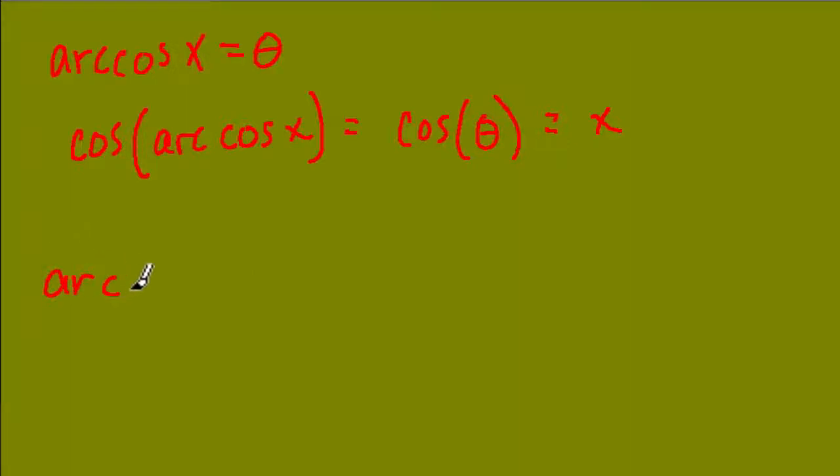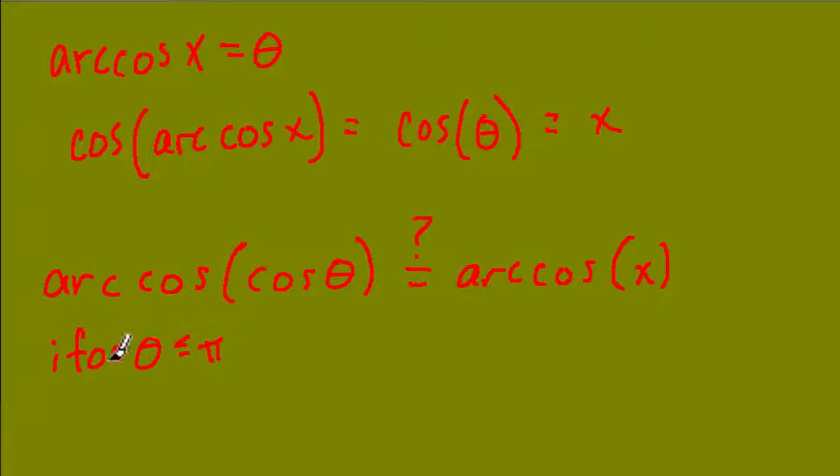Now what happens if we reverse this process and we say, what's the arc cosine of the cosine of theta? Well, the cosine of theta equals x, so it's tempting to say that doesn't this equal then just the arc cosine of x, because the cosine of x here equals x? Well, the answer is sometimes. And it works if theta is within the range where the arc cosine works, if theta is actually between pi and 0. But it's not going to work outside this range.